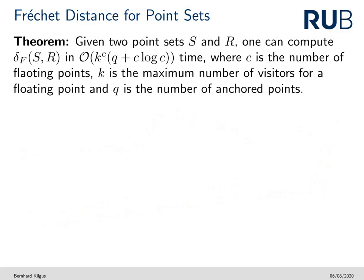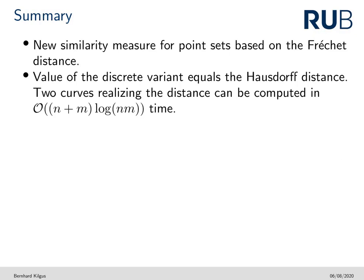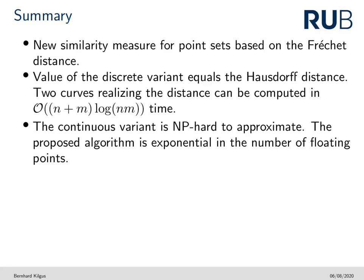What is the runtime of this approach? Let C be the number of floating points, K be the maximum number of visitors of a floating point, and Q be the number of anchored points. Then we have K^C floating point-visitor combinations, and all geometric tests can be performed in O(C log C) time, as we need to sort the floating points along a visitor segment and test for sags. Testing if the remaining points still have an epsilon neighbor takes time linear in Q. Thus, the total runtime is O(K^C × (Q + C log C)). To sum up, we introduced a new similarity measure between point sets based on the Fréchet distance. The discrete distance equals the Hausdorff distance and two curves realizing the distance can be computed efficiently. The continuous distance is NP-hard to approximate, and the proposed algorithm is exponential in the number of floating points.